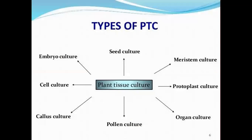Now, come to the types of PTC. PTC can be differentiated on the basis of the explant being used in the technique. If we use seeds, it is known as seed culture. If we use meristem, it is meristem culture. If we use protoplast, then protoplast culture. Other types include organ culture, clone culture, callus culture, cell culture, and embryo culture.